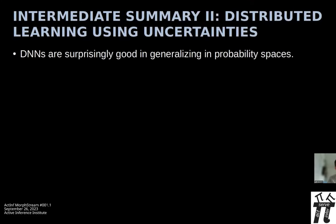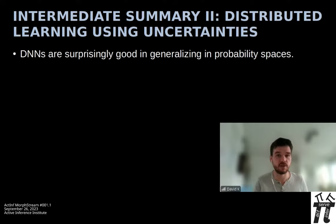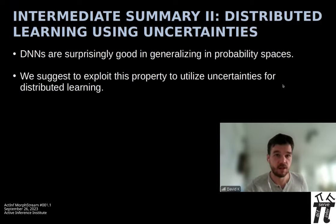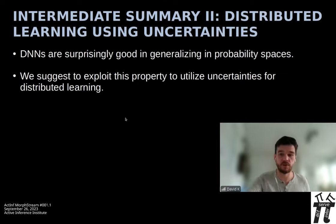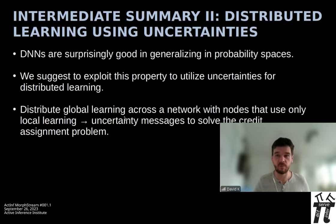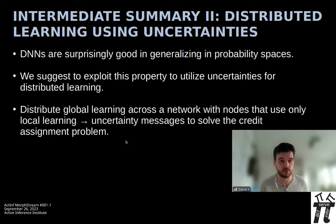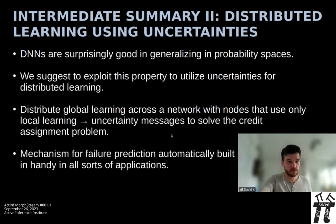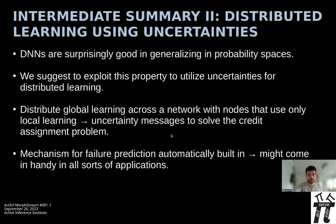Second summary: deep neural networks are surprisingly good at generalizing over probability spaces. Our idea was to exploit this and utilize it to distribute learning in the same fashion as in the first project — solving the credit assignment problem by generating these feedback networks. I want to acknowledge my coworkers and PhD students Kalil and Cabrel, who work on this topic in Bochum. The first project was work done with Christian Tetzlaff in Göttingen, and the second project involved Christian Meyer and Anand Subramoney.